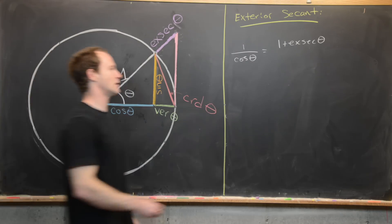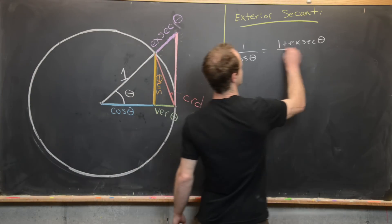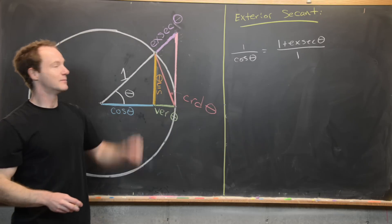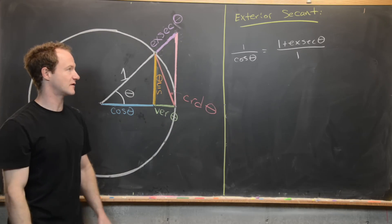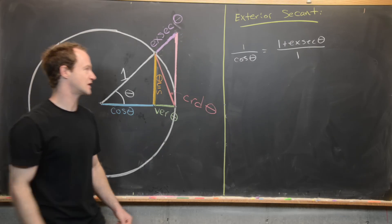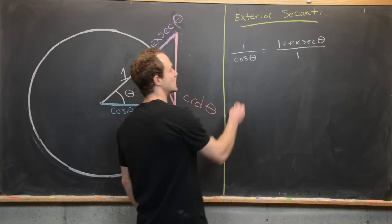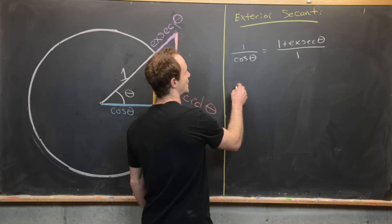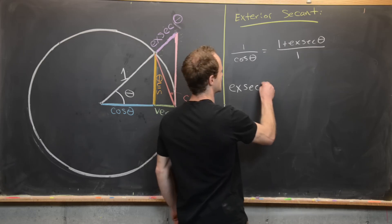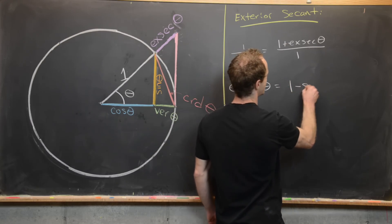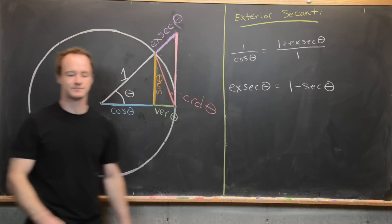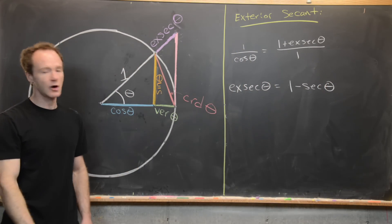From this proportion, we can solve for the exsecant: exsecant theta = 1/cosine theta − 1 = secant theta − 1. So the exsecant theta equals secant theta minus 1.